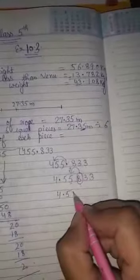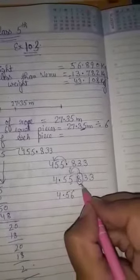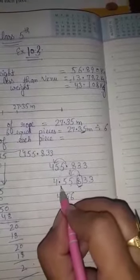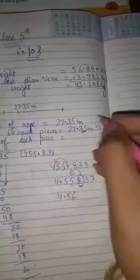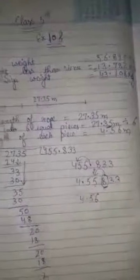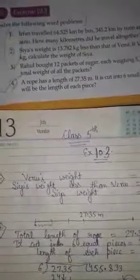If the number is less than five, then don't increase, then write 4.56. Now our answer is 4.56 meters. Now our tenth chapter is completed. Exercise 10.3, it is completed.